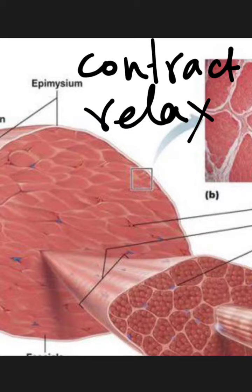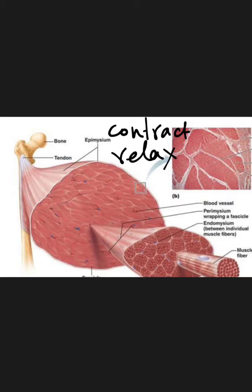The movements of hands, the alimentary canal, lungs, eyes, and so on are all due to muscular tissues. Based on their structure and functions, muscular tissues can be categorized into three types, which we will discuss in detail in the next video.